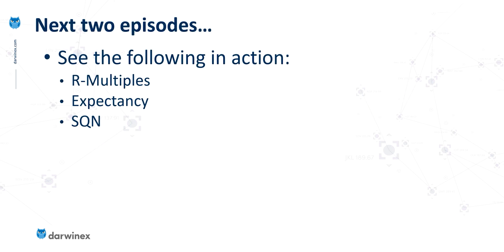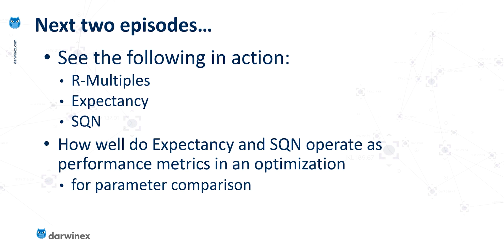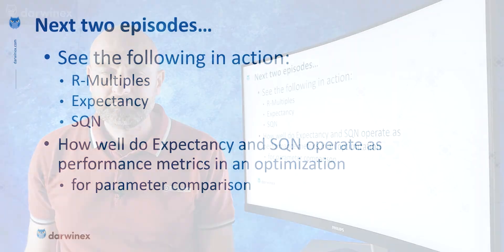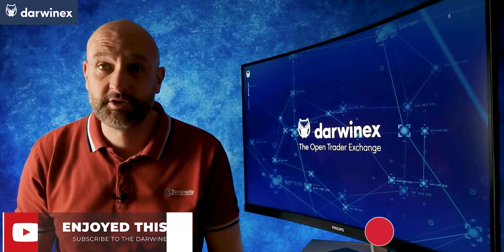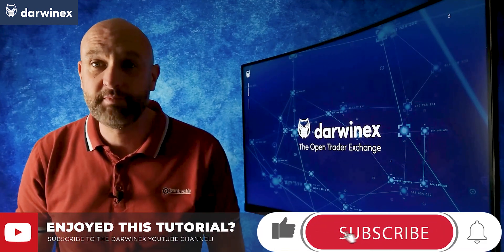That brings me on to what I'm going to be doing in the next two episodes. I'm going to be taking the theory that we've learned about R-multiples, expectancy, and the SQN and putting them all into practice. I'll be showing you how the R-multiple value can be used in the analysis of trades within an optimisation, and then going on to look at how expectancy and the SQN can potentially operate as performance metrics in an optimisation — in other words, to help us with the comparison of different parameter values. If the next episode is already available, you'll see it top right now. If not, do remember to subscribe to the channel so you get notified when it is. Please do give me a thumbs up — that's always very much appreciated.